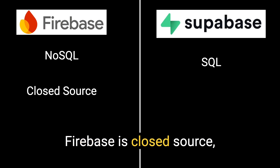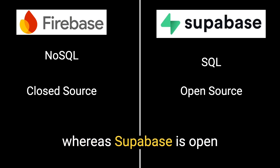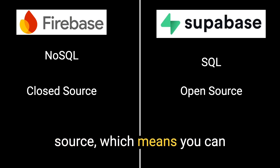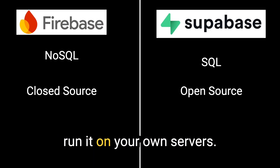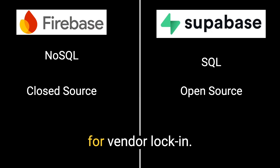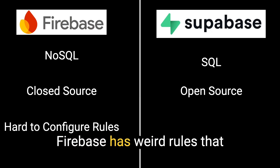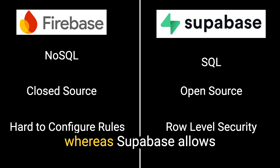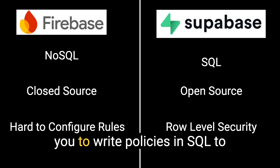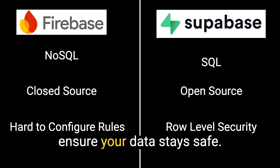Firebase is closed source, whereas Supabase is open source, which means you can take a Supabase instance and run it on your own servers — you are not forced into vendor lock-in. Firebase has complex rules you have to configure to keep your data secure, whereas Supabase allows you to write policies in SQL to ensure your data stays safe.